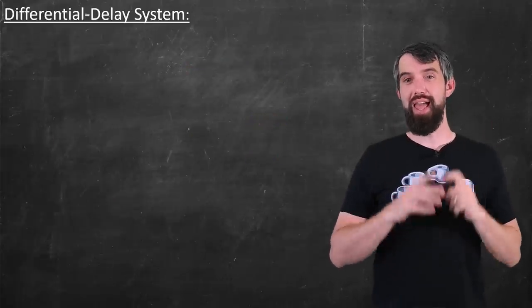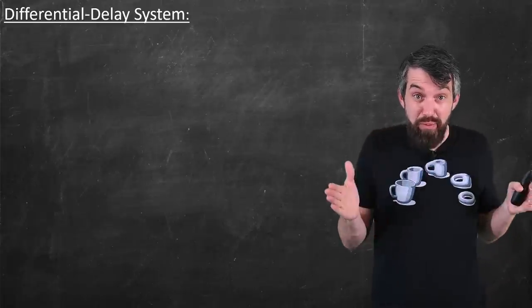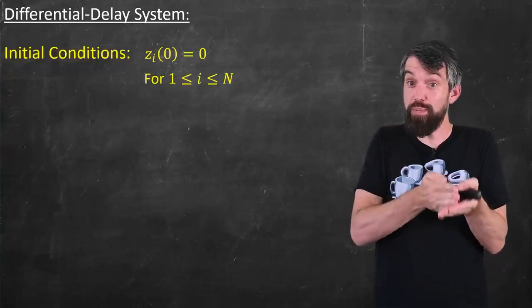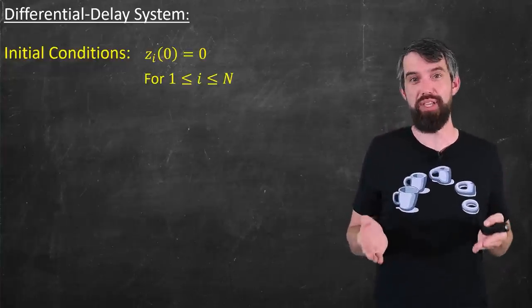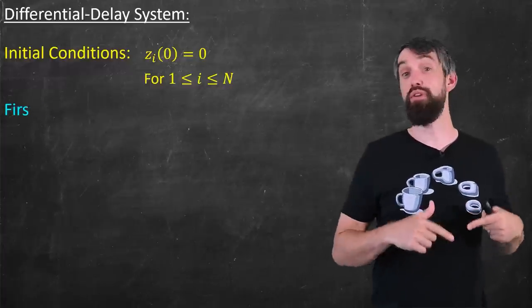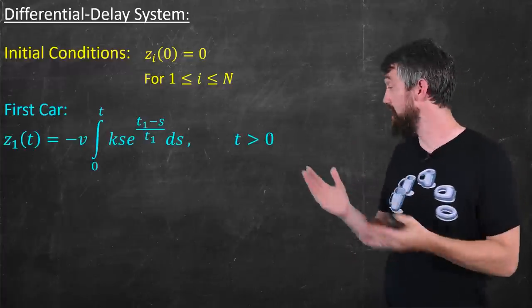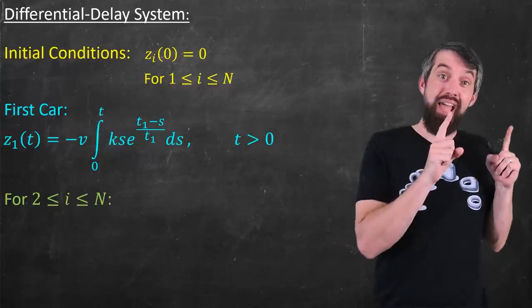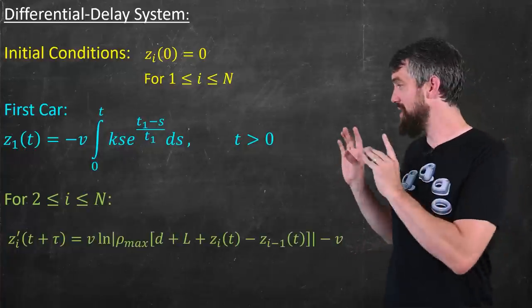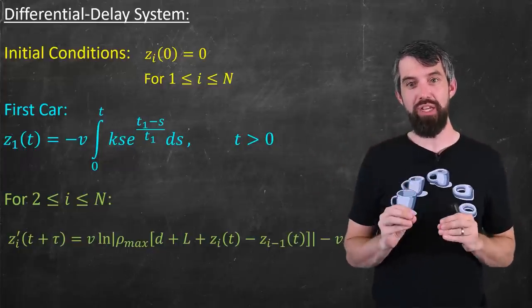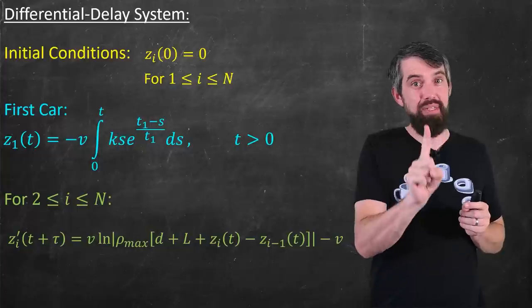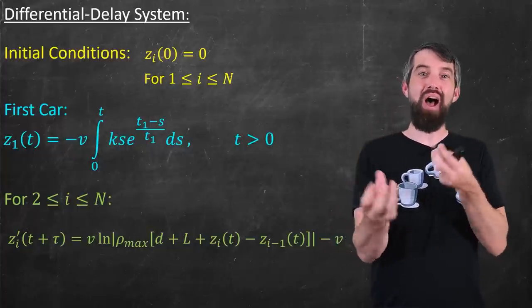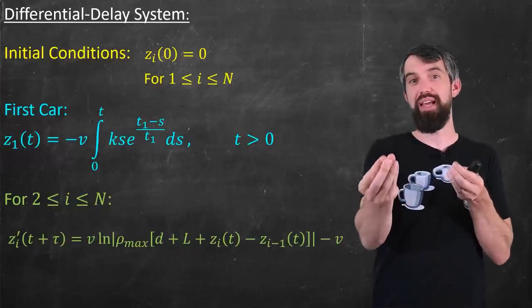So here it is. This is called a differential delay system. It's a system of equations one for each of my cars. I have initial conditions, which is that the initial displacement for every one of the n different cars that I have is zero at time zero. The behavior of the first car is described by some functions, such as the one that I chose. And then for all subsequent cars, from i going from 2 down to n, they are described by this differential delay equation. An equation that computes the derivative not at time t, but time t plus τ. And it relates that to the values of the displacement of that car and the car in front of it at time t.